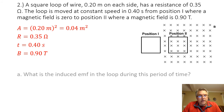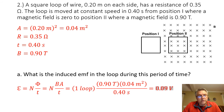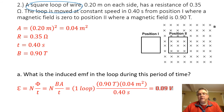The first thing they ask in this problem is: what is the induced EMF in the loop during this period of time? Once again we use Faraday's Law, so the induced EMF equals the number of turns times the magnetic field times the area divided by the time. We have a single square loop, so the number of turns is one. The magnetic field is 0.90 tesla, the area is 0.04 square meters, and the time is 0.40 seconds. The induced EMF is 0.09 volts.